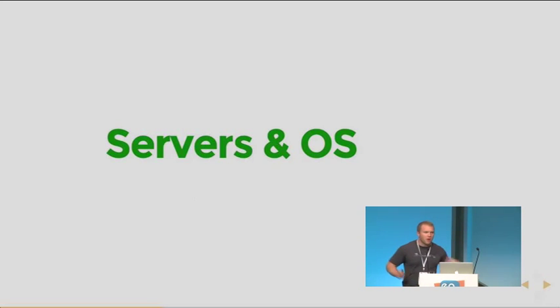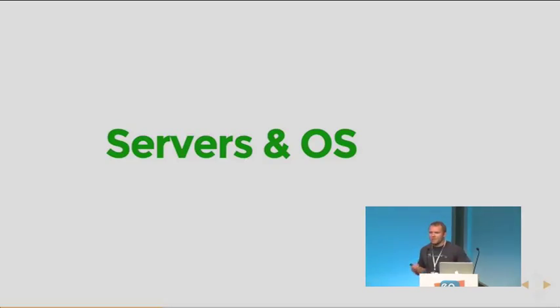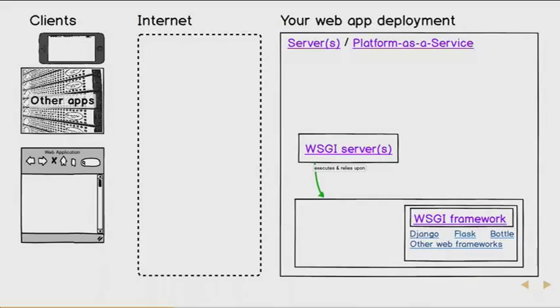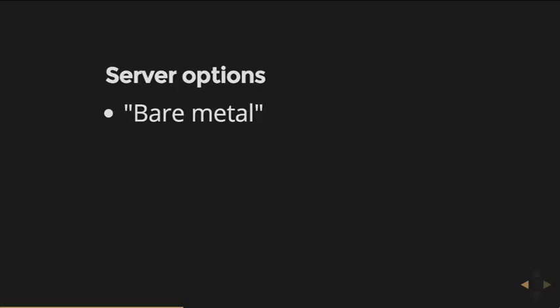Now we need a place to deploy our application. We understand what a WSGI container is — it executes our code. We need a place to put it, and that's where servers and an operating system come in. This large rectangle on the right side is our server, or you may have heard platform as a service. There's a few different variations: one is just a bare metal server — if we take a laptop, hook it up to the internet with a static IP address and point our DNS to it, we can run our web application off that. There's also virtualized servers, where we have actual hardware and virtualize mini operating systems on top.